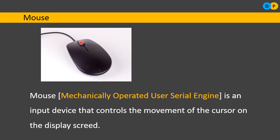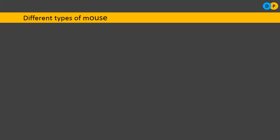A mouse has two buttons — a left click button and a right click button — using which we can control certain functions of the mouse and certain menu functions. There is also a scroller using which we can scroll document pages and navigate from one page to another. As the mouse is moved on a flat surface, the movement of the cursor is recorded on the X and Y directions of the screen.